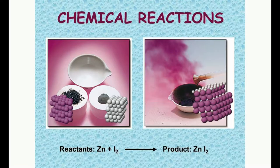Everything you did last unit is going to play into this part. When zinc and iodine react, you have to write the new formula. To do that, we take everything and drop the subscripts unless they're a polyatomic ion — remember, keep the subscript with the poly. Same rule applies.